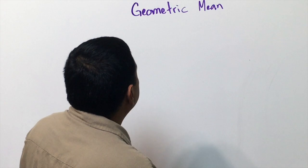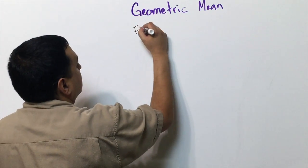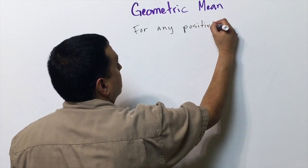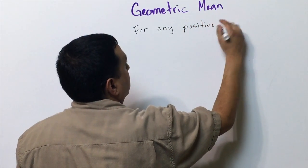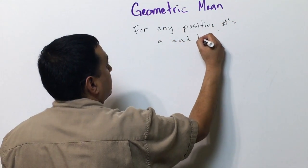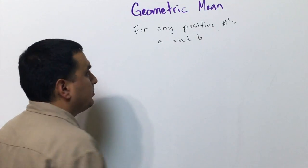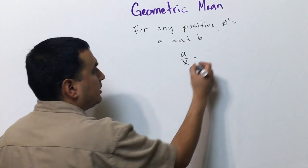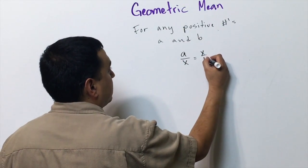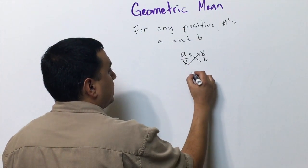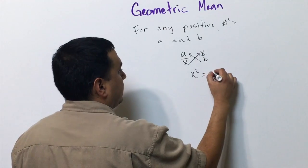Now we're going to look at what's called the geometric mean. That says for any positive numbers a and b, I can find a number x so that a over x equals x over b. If I cross multiply this, that tells me that x squared equals a times b.